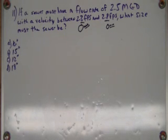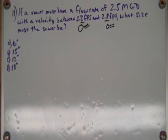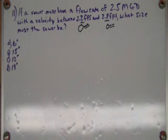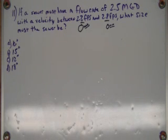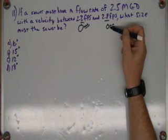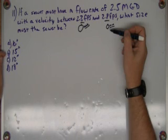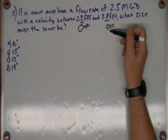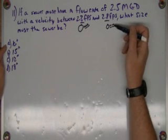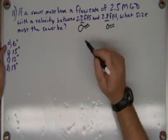I'm going to pick the pipe size based on the minimum velocity first and see where we're at. With these questions, the answer choices are designed to catch common mistakes — notice there's both a 15-inch and 16-inch option right next to each other. I expect we'll get about 15.5 inches for the minimum, so if it's anything more than 15 — even 15.00001 — you have to go to the next size up, which is 16.